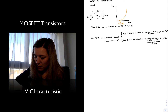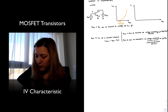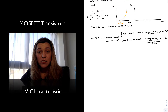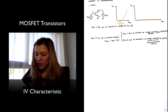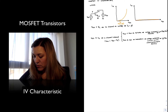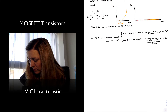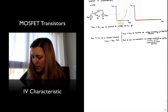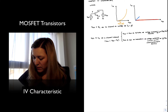If we plot the current with respect to VDS, we get a family of curves for different values of VGS. If VGS is smaller than the threshold voltage, the current is zero — that is the cutoff region, plotted in red. As VGS increases beyond threshold, we see initial behavior where current depends on VDS, but eventually the current flattens out.